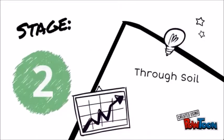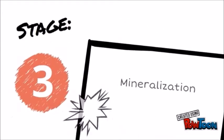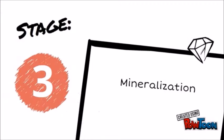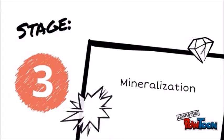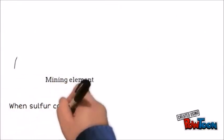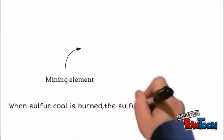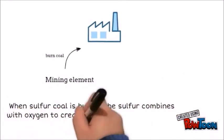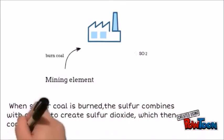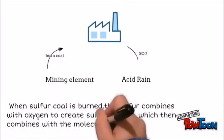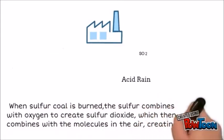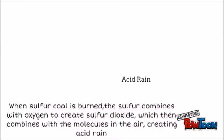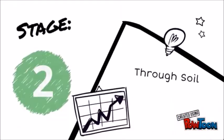Stage 3 is the Mineralization. When Sulphur compounds burn, the Sulphur combines with oxygen to create Sulphur dioxide, which then combines with the molecules in the air, creating acid rain.